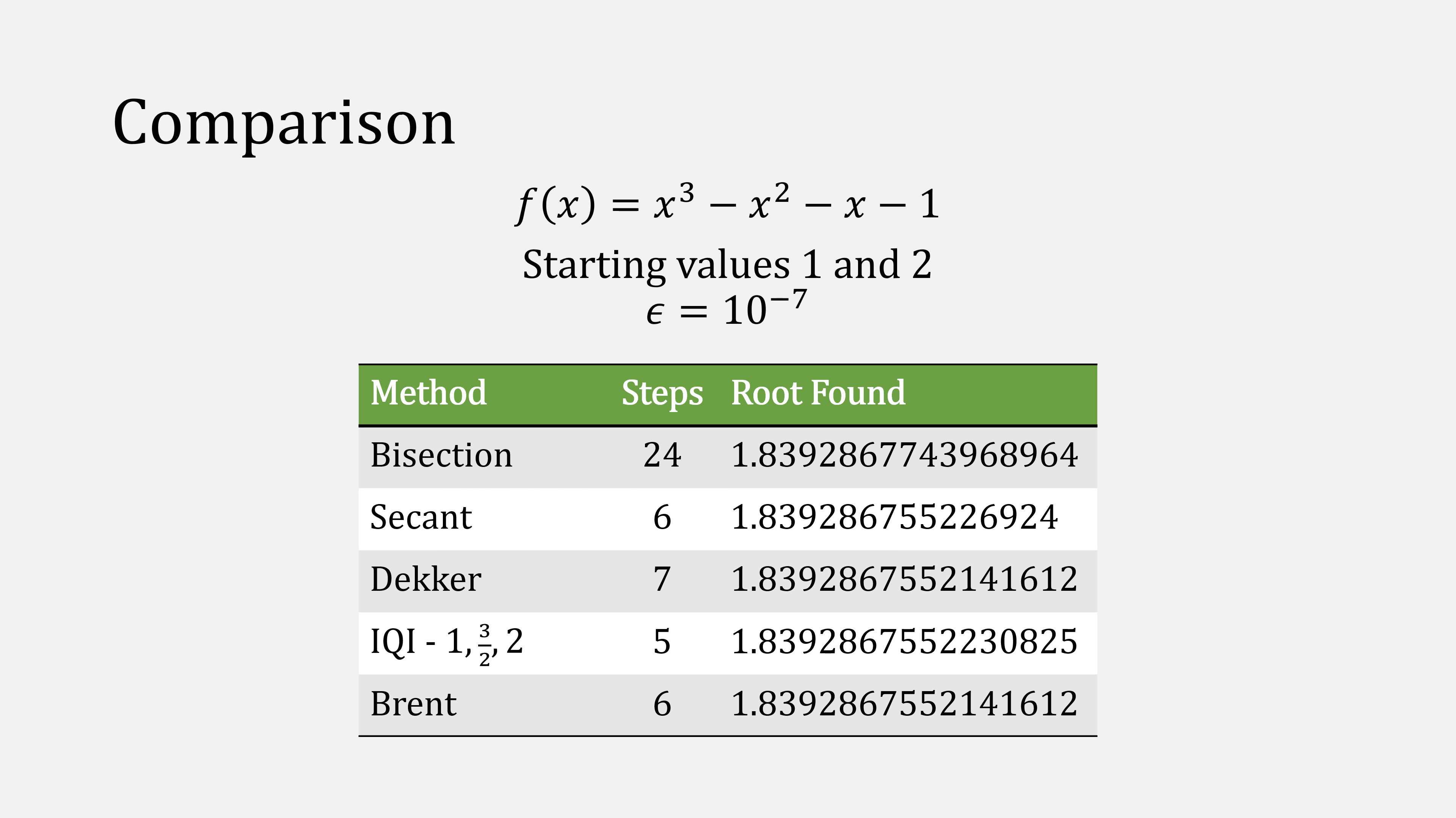Let's compare all the methods that we've talked about in this video. First, bisection took the longest amount of time at 24 iterations compared to secant's six iterations. Dekker's took one more than secant, but this is because it has a different end condition. It stops when B minus A is less than some epsilon. Inverse quadratic interpolation only took five iterations, but again, it has the tendency to fail. We also needed a third point.